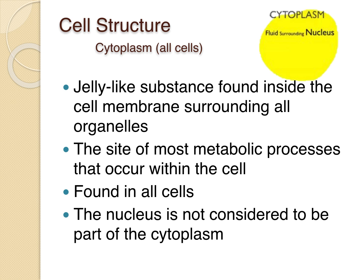The first cell structure we'll discuss is the cytoplasm. Cytoplasm is the fluid surrounding the nucleus — the nucleus is not considered part of the cytoplasm. It's a jelly-like substance inside the cell membrane that surrounds all the organelles, and all of the cell's metabolic processes take place there. Cytoplasm is found in all types of cells, whether prokaryote, eukaryote, animal, or plant.